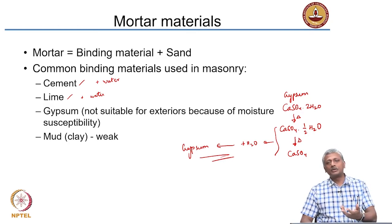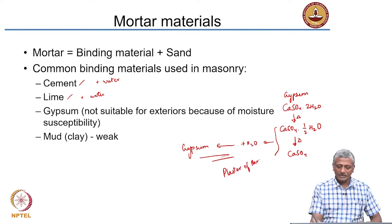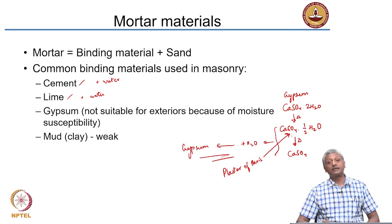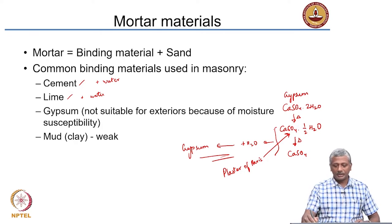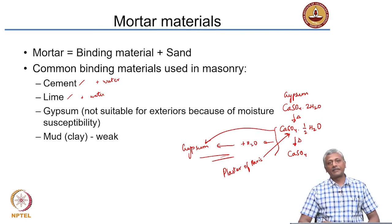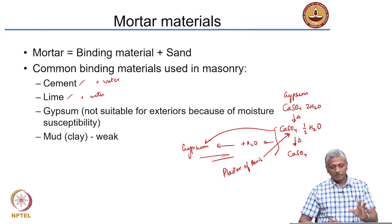Many of you would have done models in school with plaster of Paris. Plaster of Paris is essentially hemihydrate — calcium sulphate half H₂O (CaSO₄·½H₂O). When you mix plaster of Paris with water, you get gypsum. Again, it is not suitable for exterior use because of moisture susceptibility.